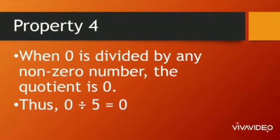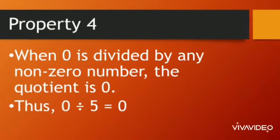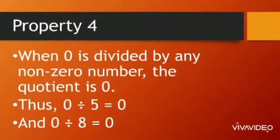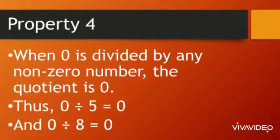0 divided by 5 equals to 0 and 0 divided by 8 is also equals to 0.